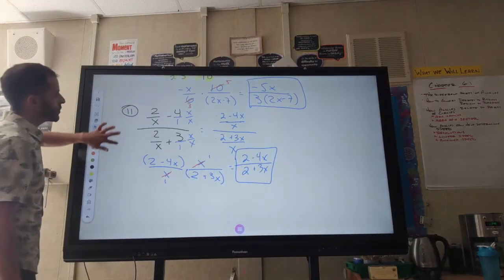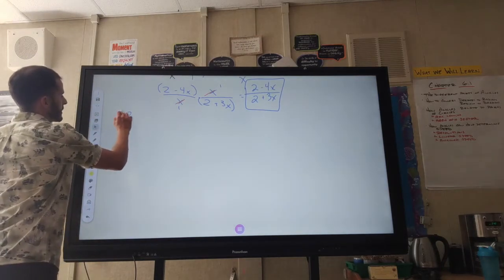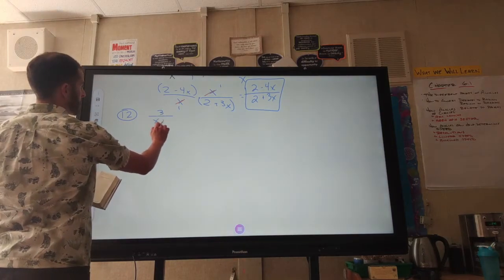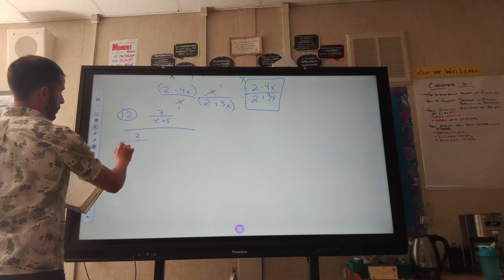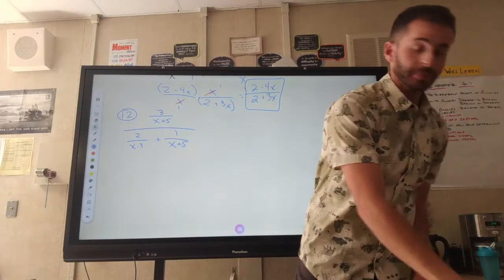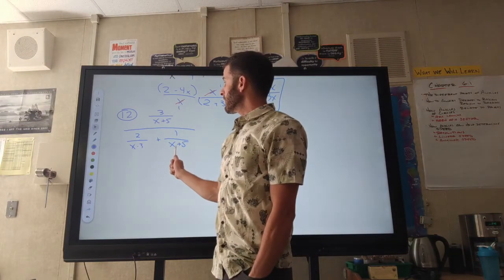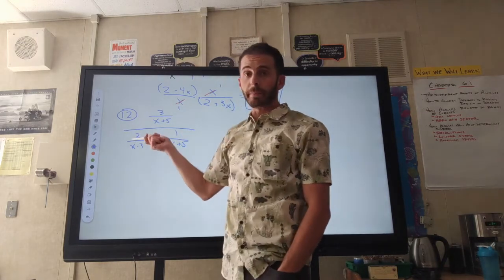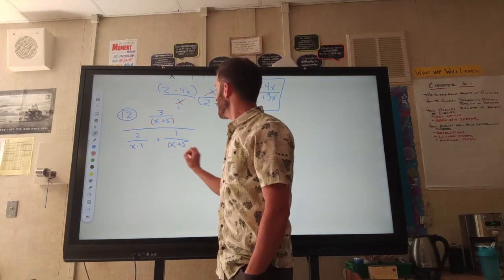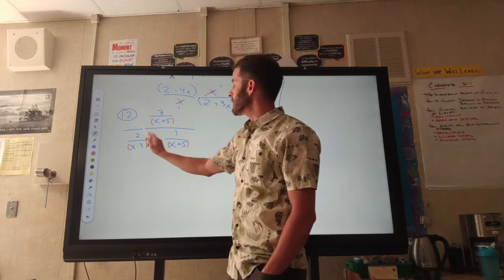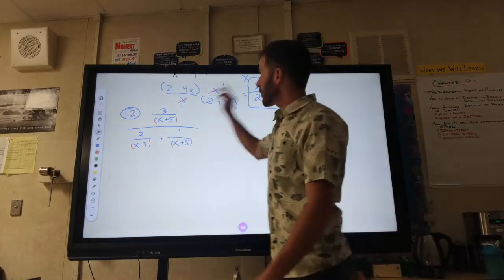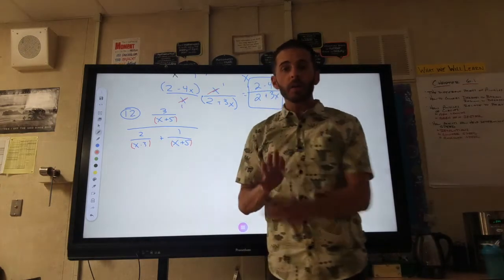Last but not least, number 12. I'm going to do it similar to number 11, but it can also be done like number 10. We have 3 over (x plus 5), all over 2 over (x minus 3) plus 1 over (x plus 5). I want to try to get the same denominator everywhere.